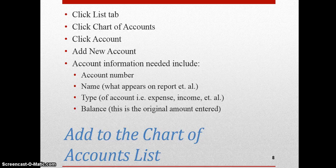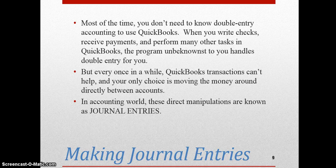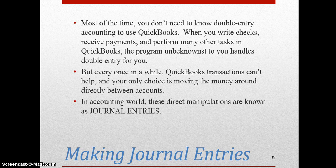To add to the chart of accounts list, you go to the List menu and click on Chart of Accounts. You click Account, and if it's a new account, you're going to click on Add New Account. Then you provide information like account number, name, type, and balance. Most of the time, you don't need to know double-entry accounting to use QuickBooks — when you write checks, receive payments, and perform many other tasks, the program handles double-entry for you. But every once in a while, QuickBooks transactions can't do that, and your only choice is moving the money around directly between accounts. In the accounting world, this direct manipulation is called general entries.